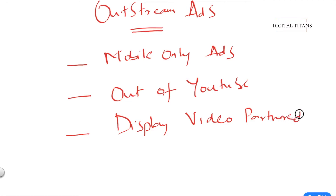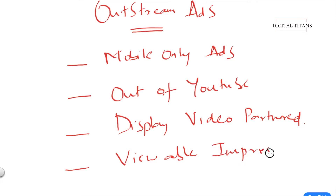Outstream ads show on all Google's partnered video websites. As an advertiser, you will pay for these ads in terms of viewable impressions. Everything else about the campaign process is the same — it's just a new format that is mobile-only, shows outside of YouTube on Google's display video partner websites, and is billed by viewable impressions.